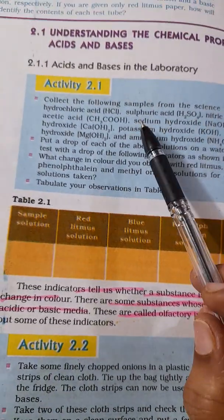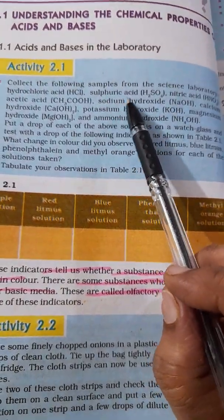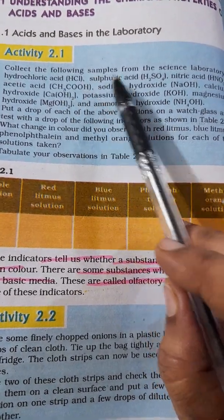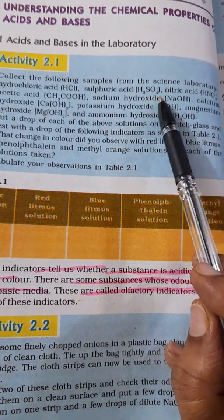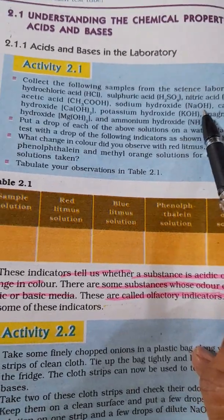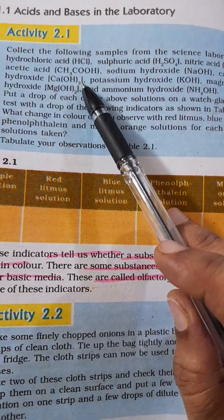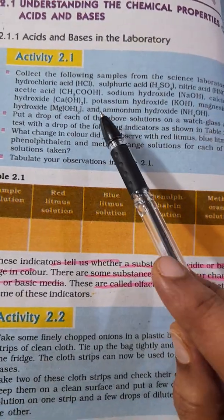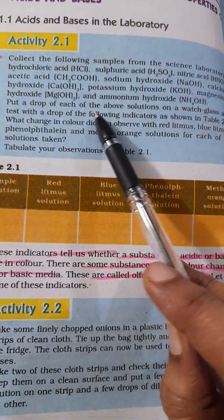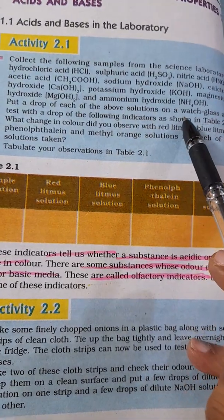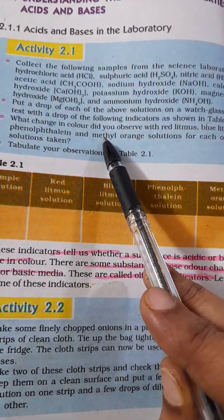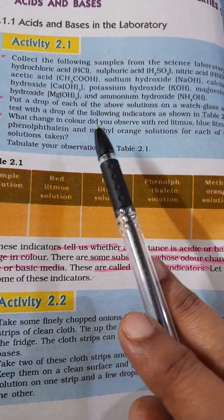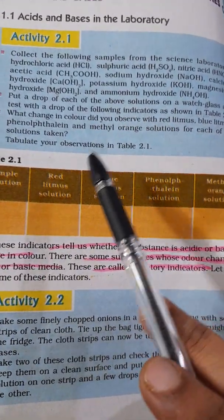You can collect some samples from the science laboratory: hydrochloric acid (HCl), sulfuric acid (H₂SO₄), nitric acid (HNO₃), acetic acid (CH₃COOH). Then bases like NaOH, calcium hydroxide, potassium hydroxide, magnesium hydroxide, and ammonium hydroxide. Put a drop of each of the above solutions onto a watch glass and test with a drop of indicators.